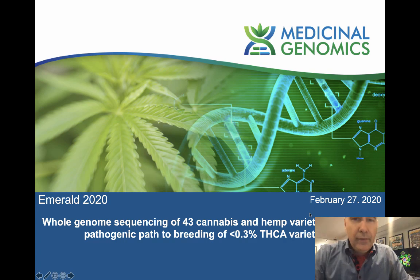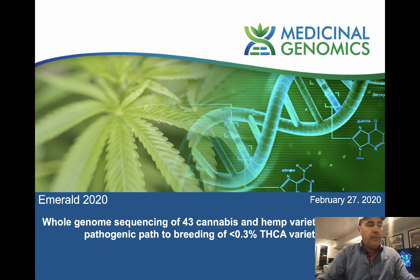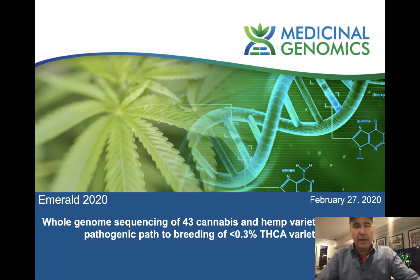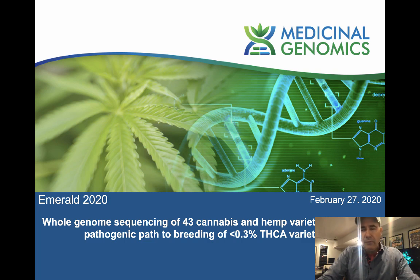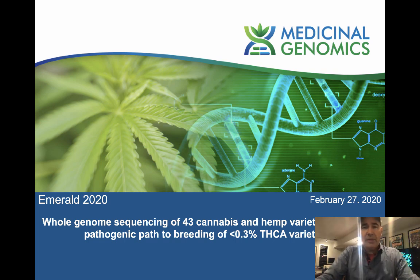This is a re-recording of an Emerald Conference 2020 presentation given at an Agilent seminar. This topic covers a broad array of information regarding the cannabis genome. There is work here related to a pre-print that was just published, as well as work describing how to potentially breed for particular hemp genetics.